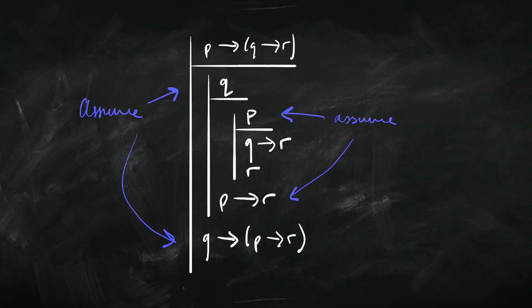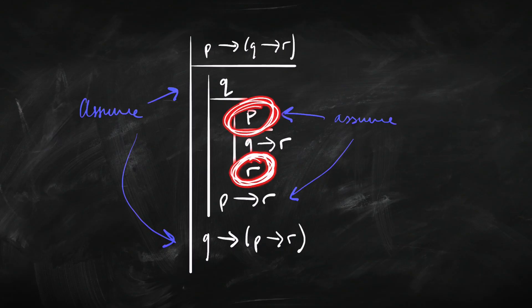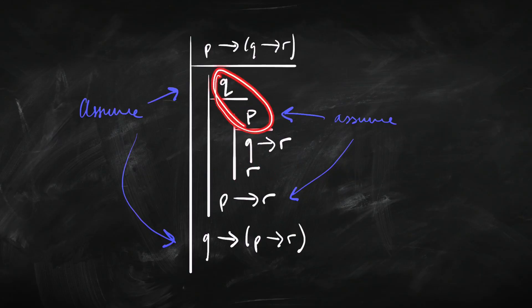Let's relate this strategy to the first example: from 'if p then if q then r' to 'if q then if p then r'. We assumed q and tried to get to 'if q then if p then r'. In order to get there, we needed to infer 'if p then r' — that was our revised target. To get there, we assumed p and tried to get to r, which became our next revised target. Using the things we'd assumed plus our initial premise, we used p to get 'if q then r', and then used q to give us r. That's how the general strategy applies to this example.